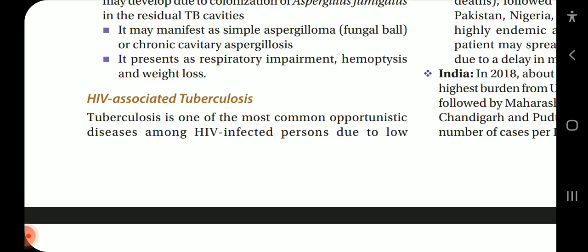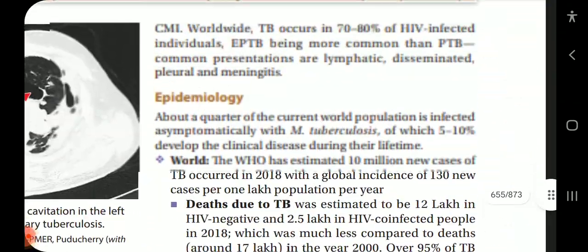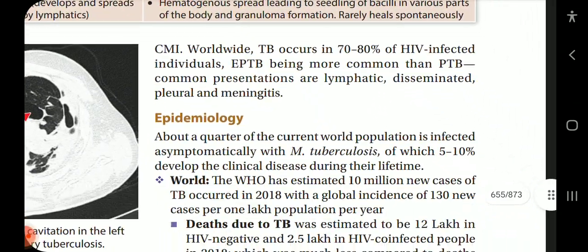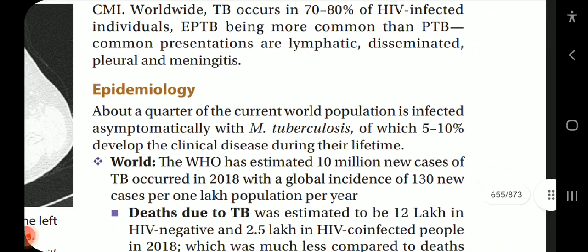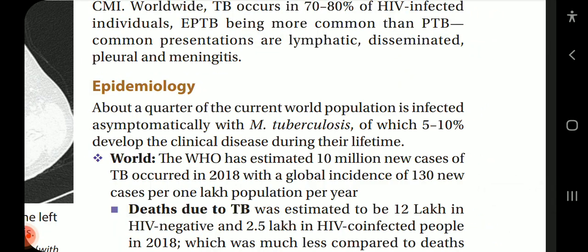HIV-associated tuberculosis: tuberculosis is one of the most common opportunistic diseases among HIV-infected people due to low cell-mediated immunity. Worldwide, TB occurs in 70–80% of HIV-infected individuals. EPTB is more common than PTB in this group, with common presentations being lymphatic, disseminated, pleural and meningitis.